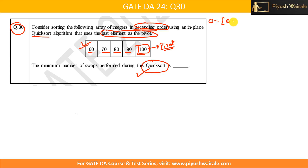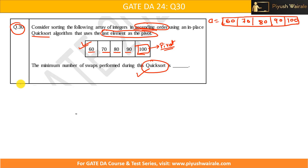Let's say A equals the array [60, 70, 80, 90, 100]. In this problem we are going to apply the second method we discussed in the videos — not the Python implementation, though even if you apply that you will get the same answer. Here, 100 is the pivot element.